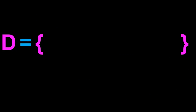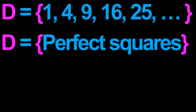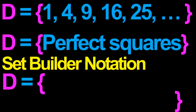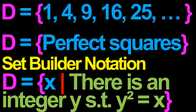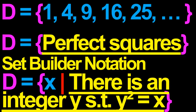Let's now consider another set D, the set of all perfect squares. So D would just be the set consisting of 1, 4, 9, 16, 25, and so on. How would we write down the set D in set builder notation? Here's one possible way: D is the set of things x which satisfy the property that there is an integer y such that y squared is equal to x. A perfect square is precisely any object that satisfies this property, hence D is indeed the set of perfect squares.